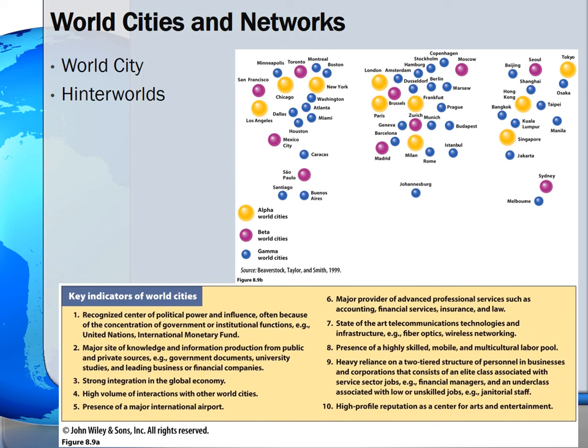But central place theory basically falls short in the hierarchy of world cities, because in a global arena, business is transacted electronically in a matter of minutes, and therefore distance is not a factor. This map presents one classification of world cities based on the geographies of dominant firms in four sectors: accounting, advertising, banking, and legal services.